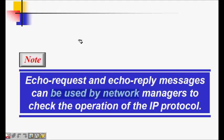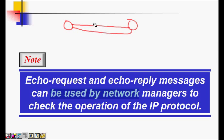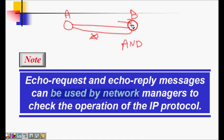These messages are used to find whether devices are connected — is the link working and is the host alive? You cannot contact host B if the link is broken or if the host is not alive. It checks both conditions, and if both are true you get a reply back.